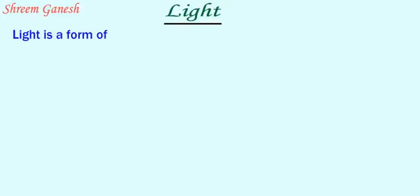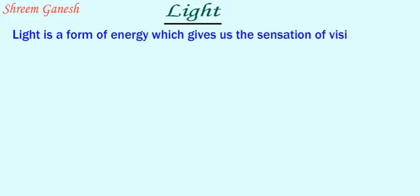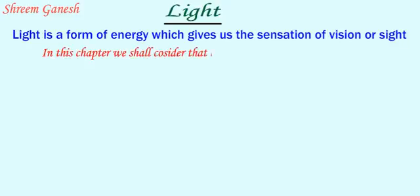Light is a form of energy which gives us the sensation of vision or sight. In this chapter we shall consider that light travels on a straight line path.